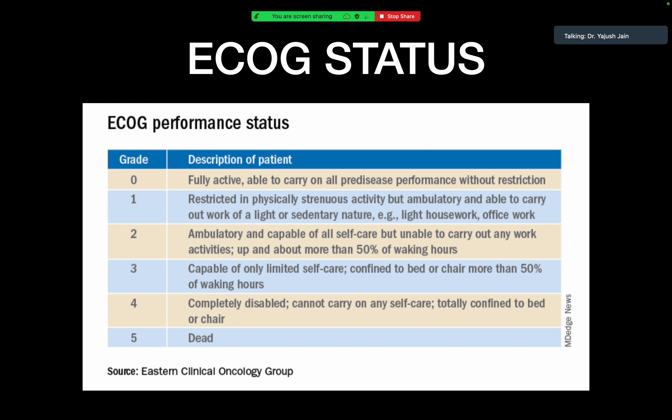The ECOG status was developed by the Eastern Clinical Oncology Group, graded zero to five. Zero is a fully active patient. Grade 1 means sedentary but able to perform work in a restricted manner — can take care of themselves, do office work. Grade 2: capable of self-care, ambulatory, active more than 50% of waking hours. Grade 3: limited self-care, confined to bed or chair more than 50% of waking hours, needs assistance. Grade 4: completely disabled. Grade 5: dead.